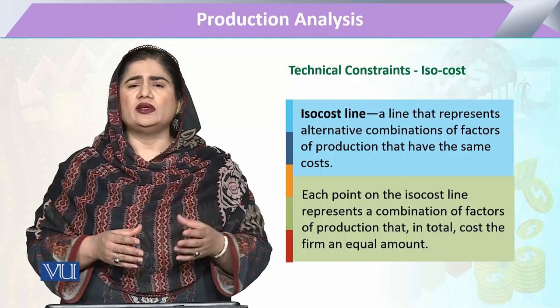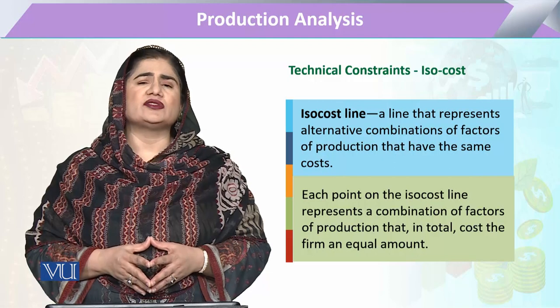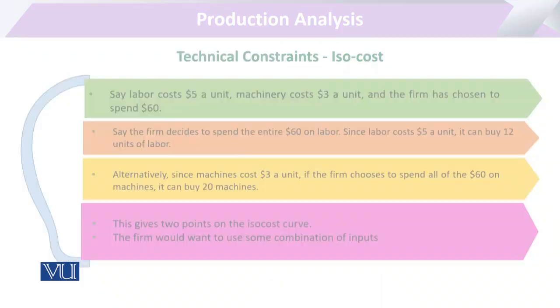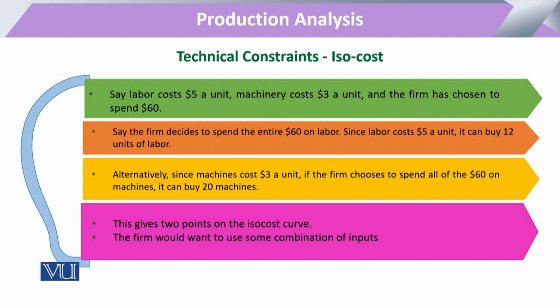ISO cost line وہ line یا graph ہوگا جو various combinations of factors of production کو represent کرتا ہے جہاں cost same آئے۔ مثال کے طور پر، ایک producer کے پاس various combinations ہیں اور وہ market price کے تحت دیکھتا ہے کہ labor کو پانچ روپے per unit اور capital یا machinery کو تین روپے per unit مل رہے ہیں۔